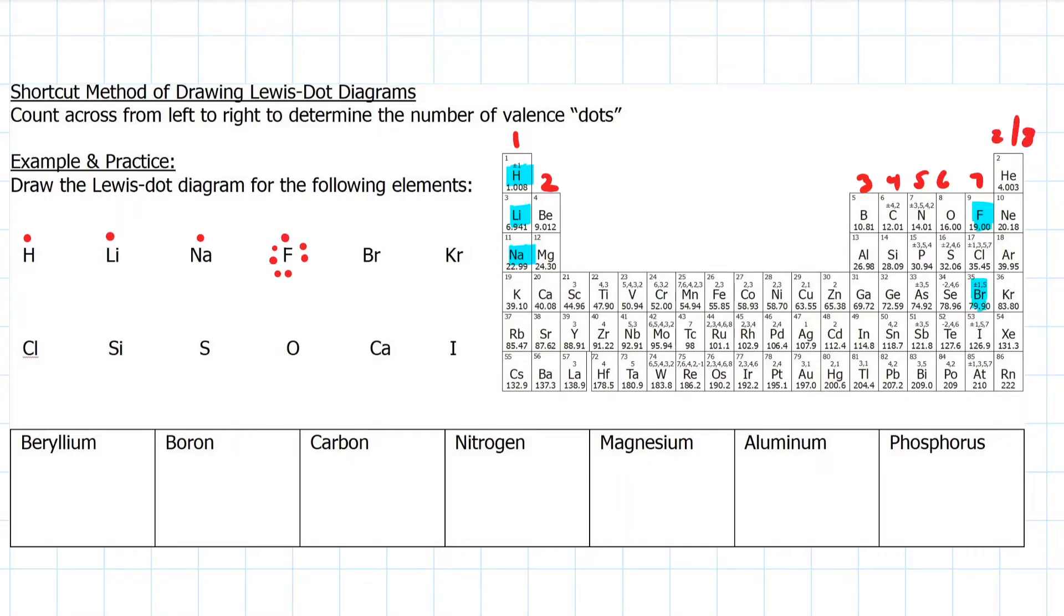As for bromine, since it's a close cousin with chlorine and fluorine, in the family of, you guessed it, halogens, it will have seven dots. Krypton, being cousins with argon and neon, will have eight electrons.